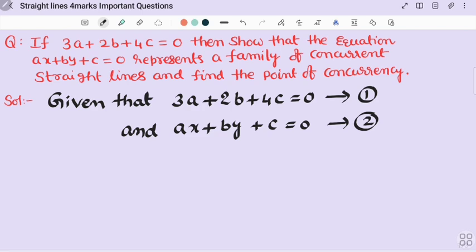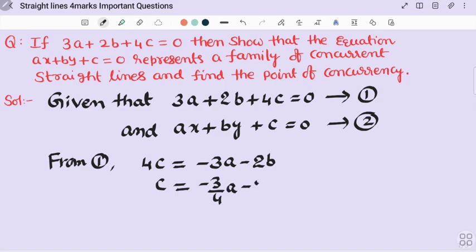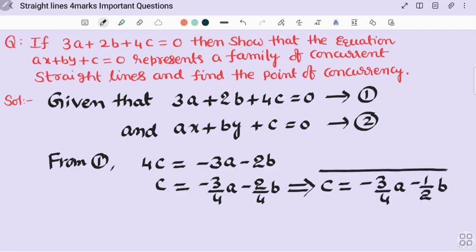From equation 1, c value make subject and substitute in the equation 2. From equation 1, 4c = -3a - 2b. I want only c, so c = -3/4 a - 2/4 b. Even more simplification, c = -3/4 a - 1/2 b. This is the value of c.